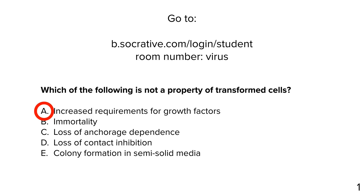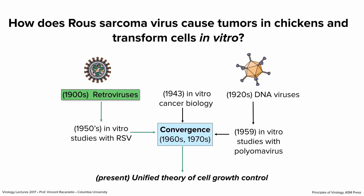Here's the route to understanding viral transformation and its relationship to cancer. I've told you about the discovery of retroviruses, the in vitro studies with RSV by Temin, and DNA viruses that can transform cells. In the 1960s and 70s, all three areas — virology, cell biology, and cancer biology — came together in the convergence that gave us the unified theory of cell growth control. Starting with how viruses cause transformation, we now understand how cells divide — and it's because of viruses.